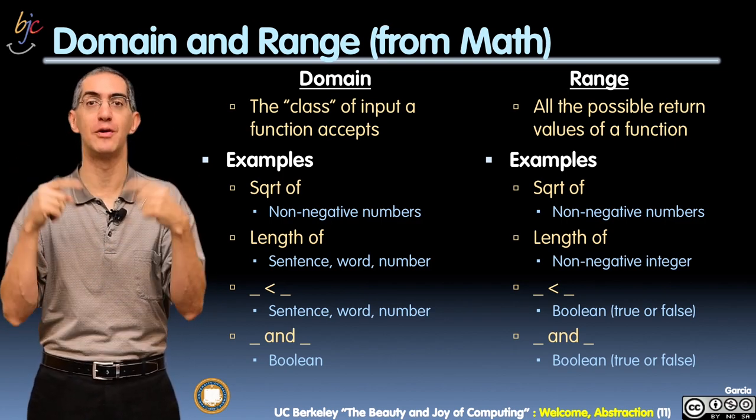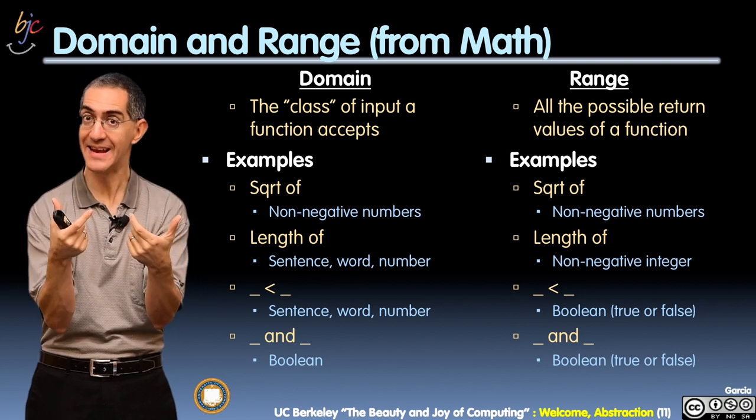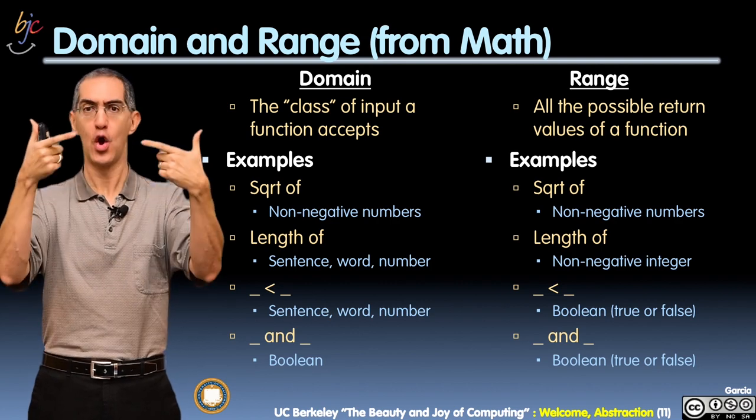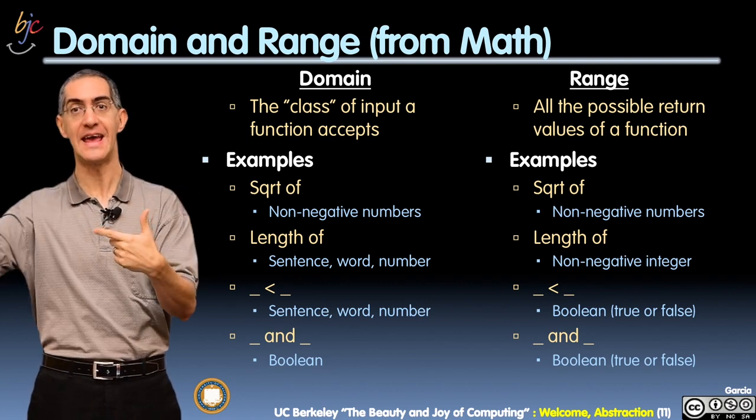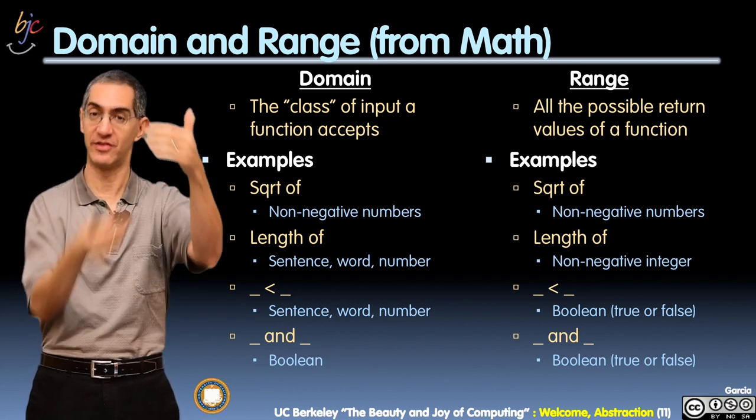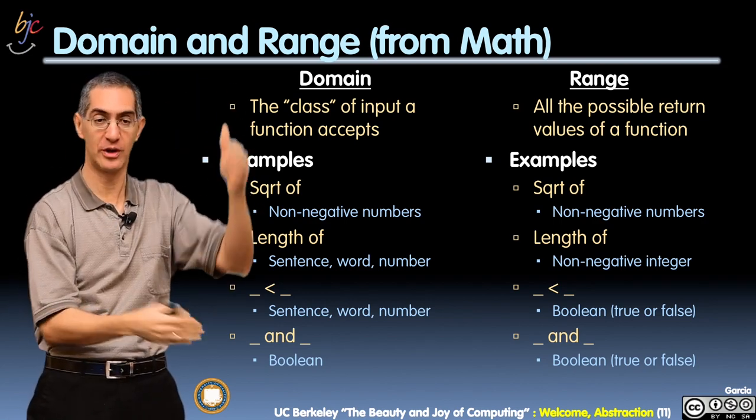But it turns out it's really powerful. It can also have a domain of sentences or words. Isn't that interesting? It says, which of these would be closer to A in the dictionary? And that's really useful for sorting words in a list.